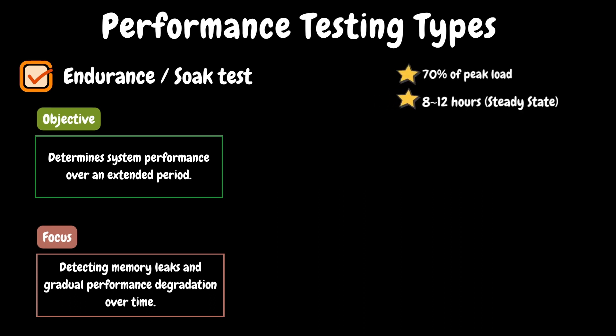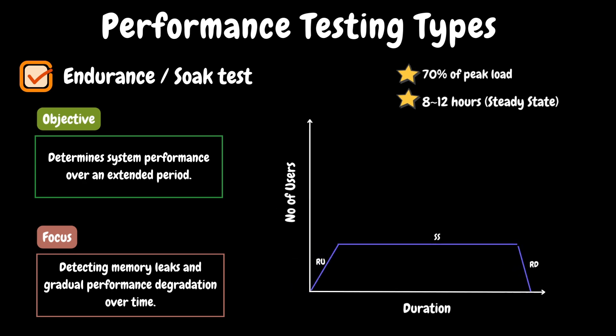In other words, the program continues to allocate memory without freeing up memory that is no longer in use. Because of memory leaks, we may notice degraded performance, system crashes, and negative user experience. In the application logs, we will see out-of-memory exceptions whenever there is a memory leak. In general, this test will be executed with 70% of the peak load or average user load. This test will be scheduled for 8 to 12 hours of steady state; however, duration may change based on the application traffic pattern — some applications operate 8 hours and some may be 24 hours.